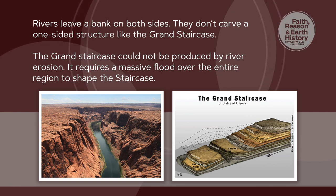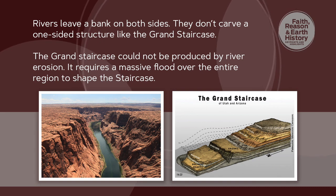The Grand Staircase could not be produced by river erosion. It seems to require a massive flood over the entire region to shape the staircase. The evidence presented indicates that standard geologic theory does not have an explanation for how the Grand Staircase formed, and I have not found anything in the geological literature that even tries to explain it. The best explanation for how this massive flow of water could occur is that it eroded at the end of, or even after, the global flood.